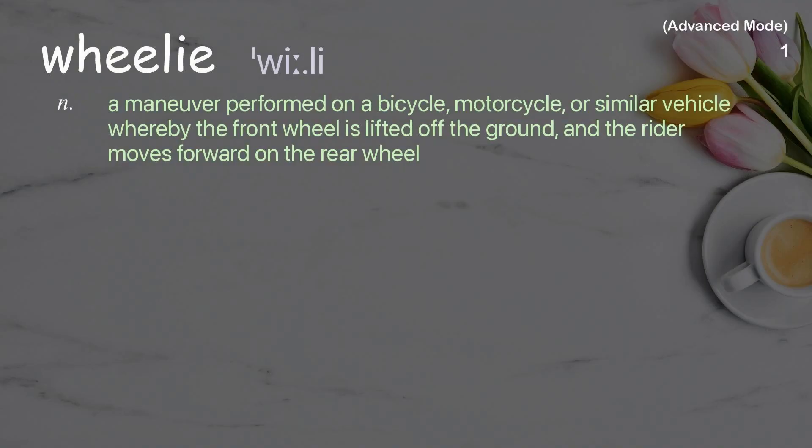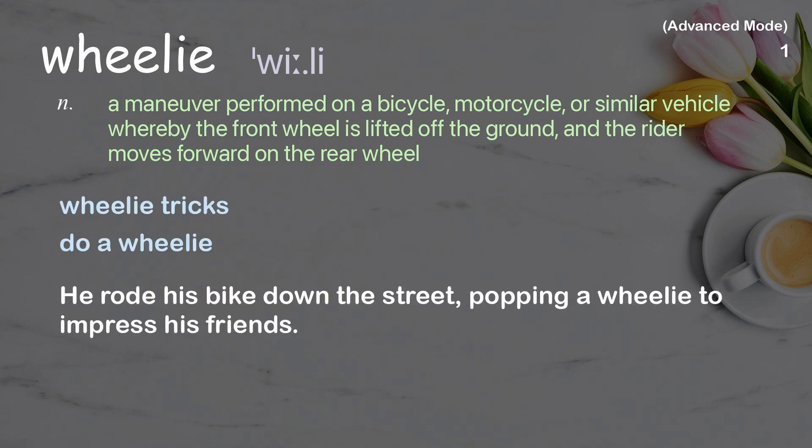Wheelie. A maneuver performed on a bicycle, motorcycle, or similar vehicle, whereby the front wheel is lifted off the ground, and the rider moves forward on the rear wheel. Examples: wheelie tricks, do a wheelie. He rode his bike down the street, popping a wheelie to impress his friends.